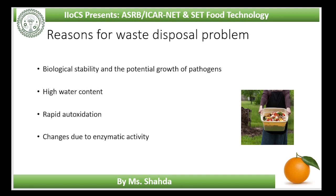The current methods for further utilization of product-specific waste have developed along traditional lines and have been closely bound to the agricultural origins of raw materials themselves. The two general methods of traditional waste utilization have been to use the waste as either animal feed or fertilizer. Many existing agricultural solutions of waste disposal are a balancing act between legal regulations and the best ecological and economical solutions.